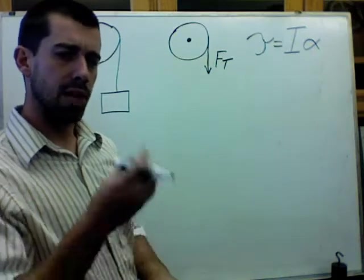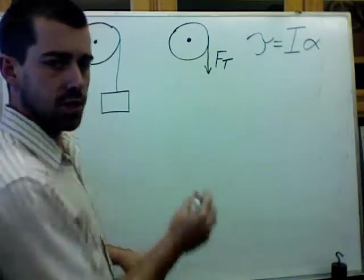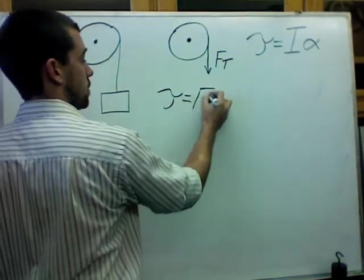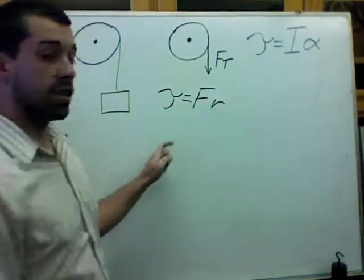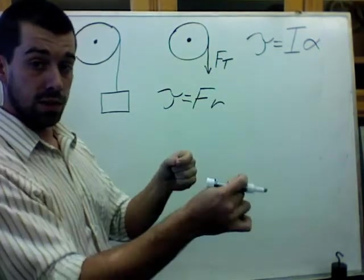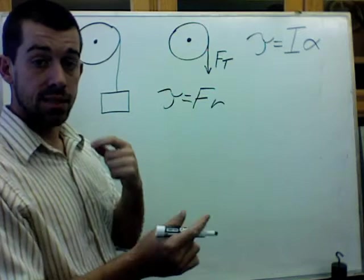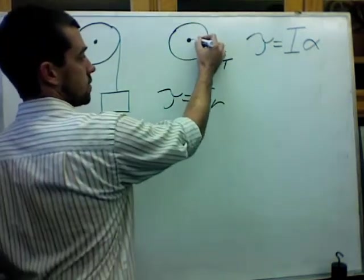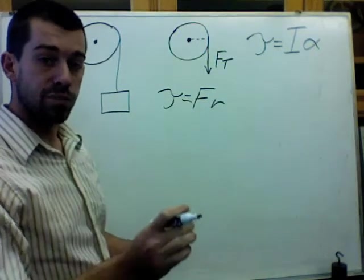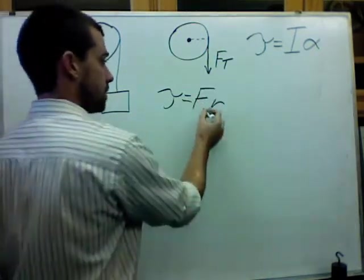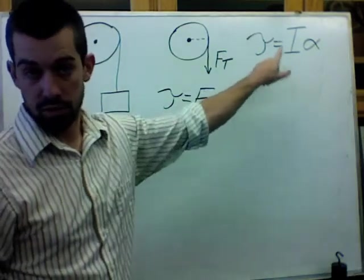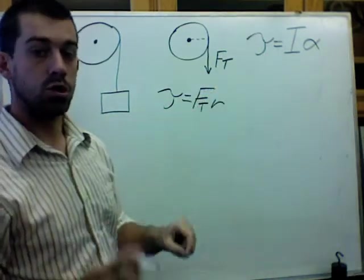Now we should remember that we have another equation. We know that torque is equal to a force times the radius between the center and where that force is applied. In this case, the radius is the radius of the pulley and the force is the force of tension.